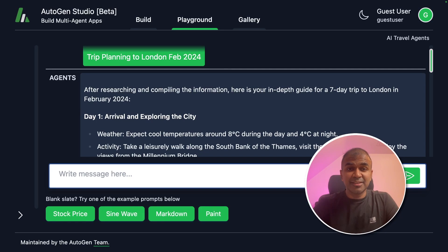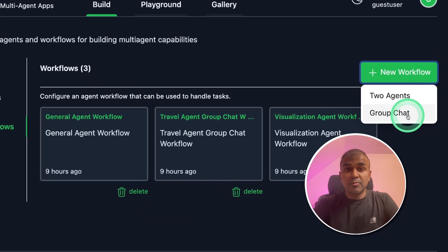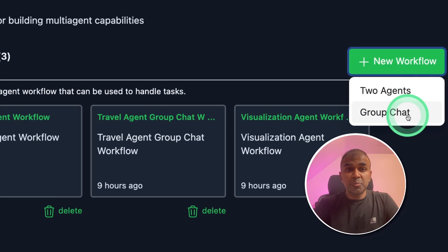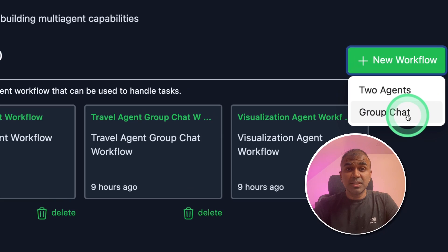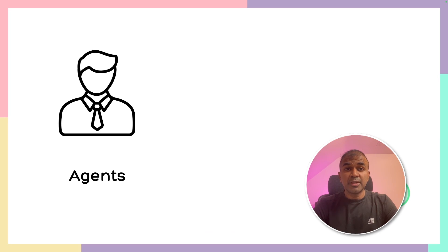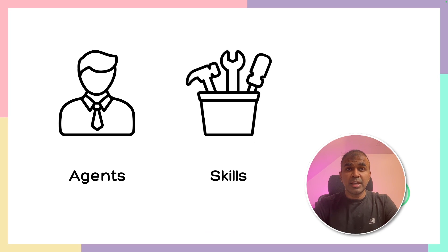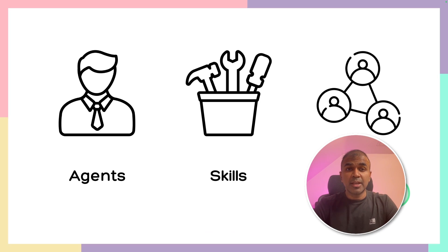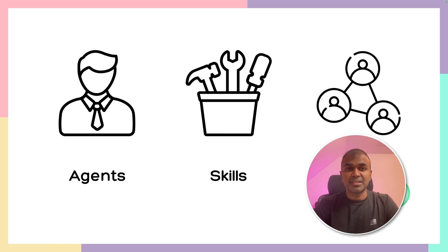This is amazing. Now we have the Autogen user interface where you can create group chats using the UI. You are able to create agents, add skills to those agents, and also make them work together. That's exactly what we're going to see today. Let's get started.